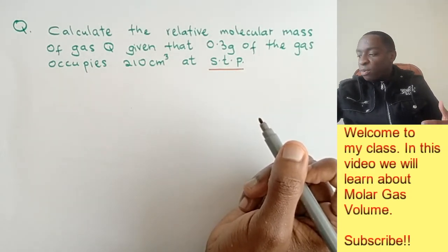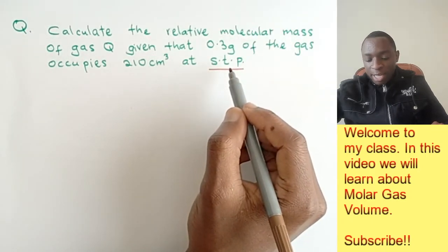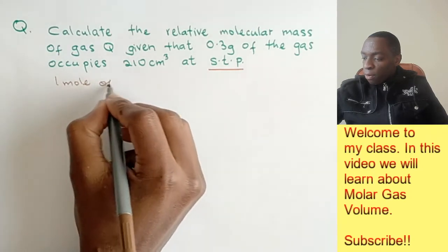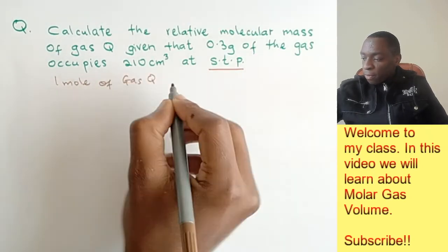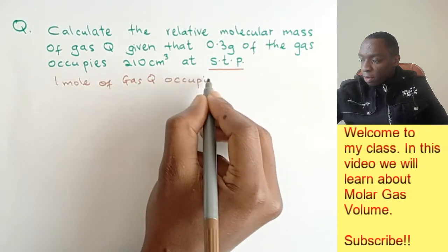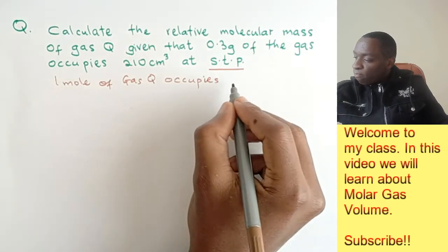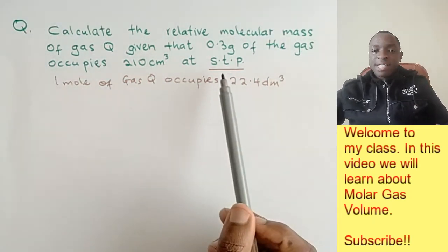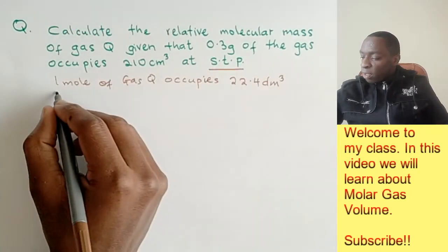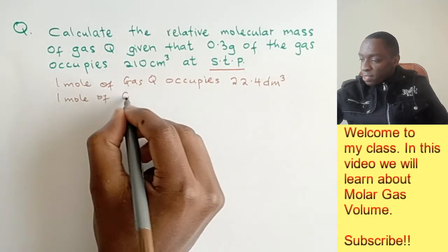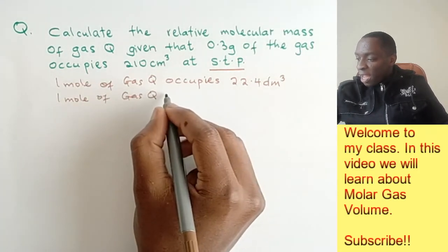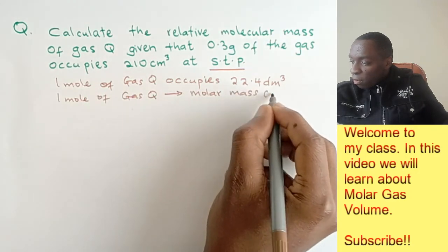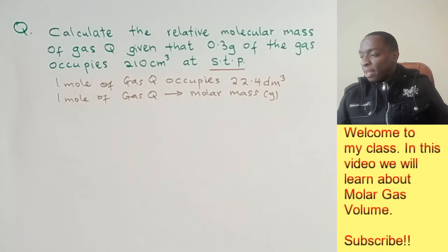The first thing you need to do is remember that the molar gas volume at STP is 22.4 dm³. So 1 mole of gas Q occupies 22.4 dm³. This is the information we get from STP. We know that 1 mole of gas Q has a mass known as the molar mass.